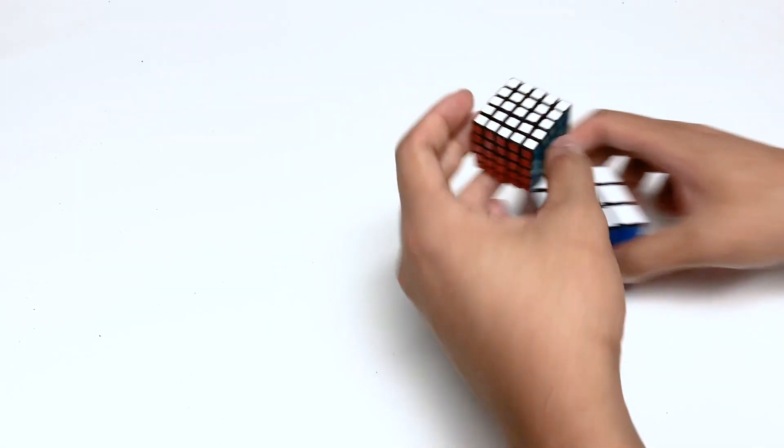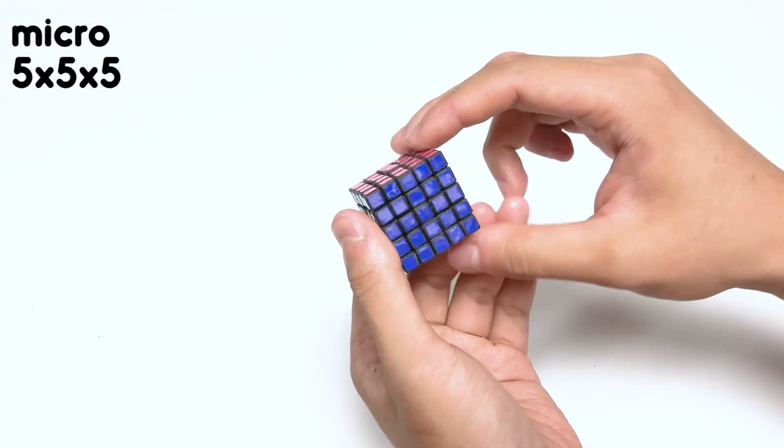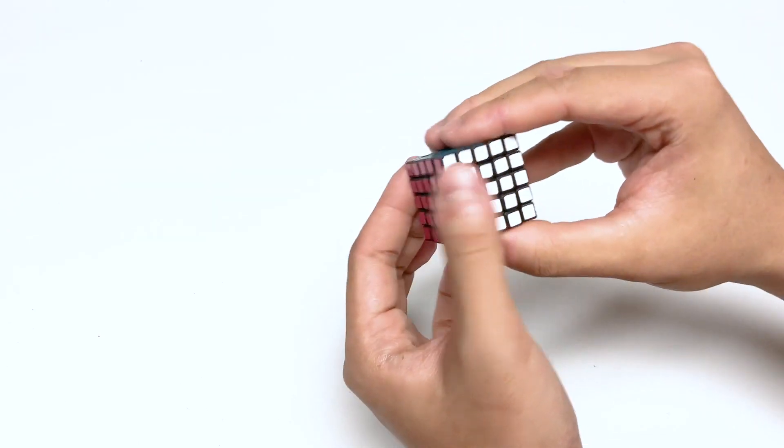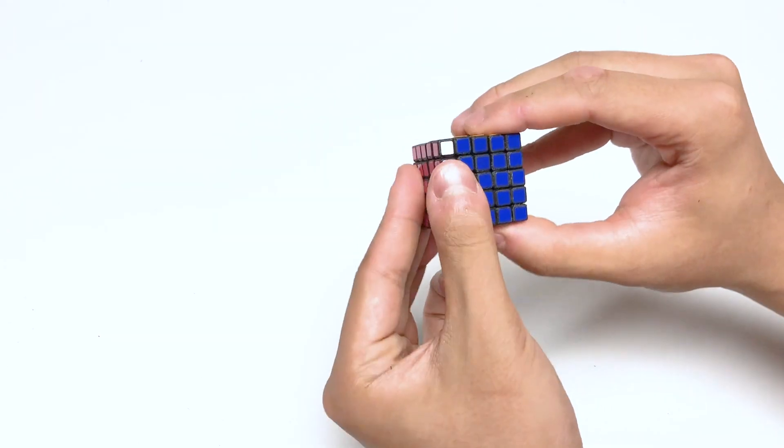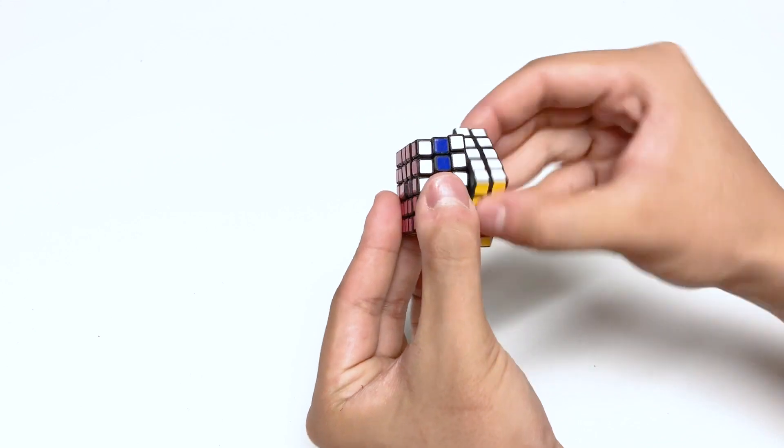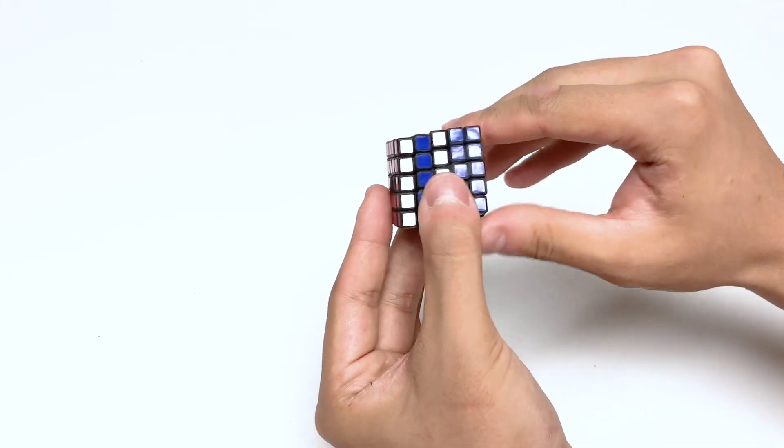This is the Micro 5x5. It is a very small 5x5x5 Rubik's Cube measuring in at 35 millimeters cubed.